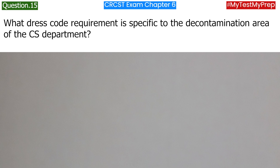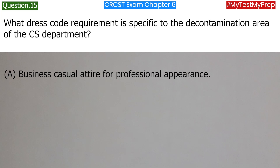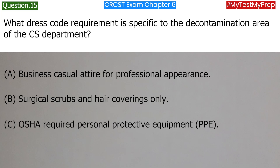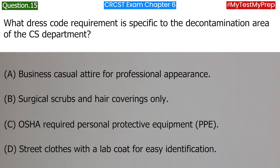What dress code requirement is specific to the decontamination area of the CS department? A. Business casual attire for professional appearance. B. Surgical scrubs and hair coverings only. C. OSHA-required personal protective equipment (PPE). D. Street clothes with a lab coat for easy identification. Answer: C. OSHA-required personal protective equipment (PPE).